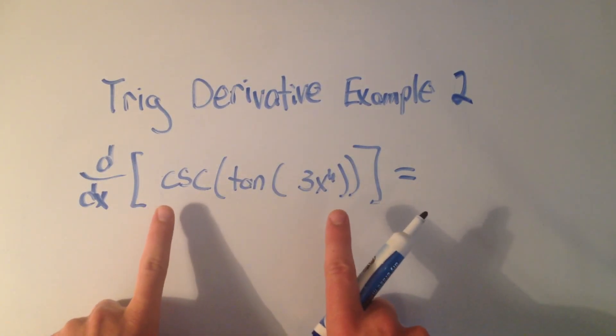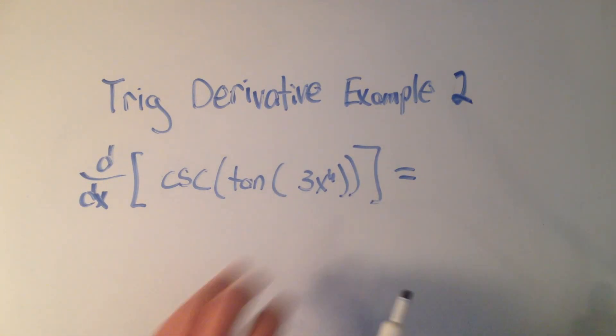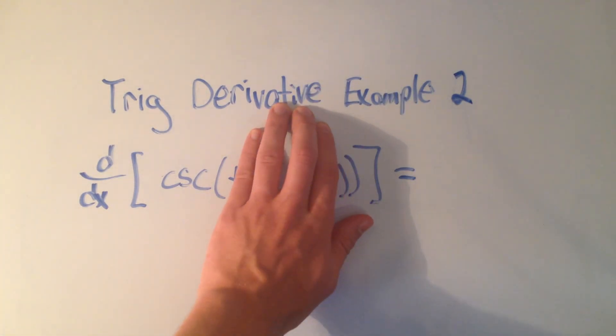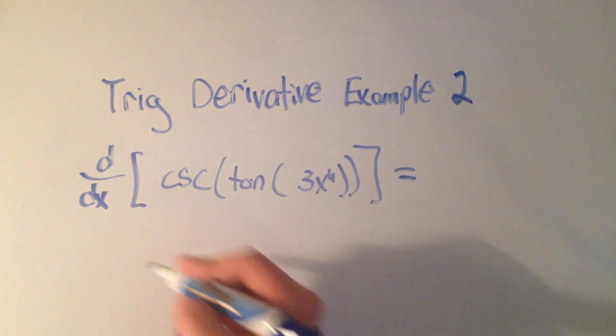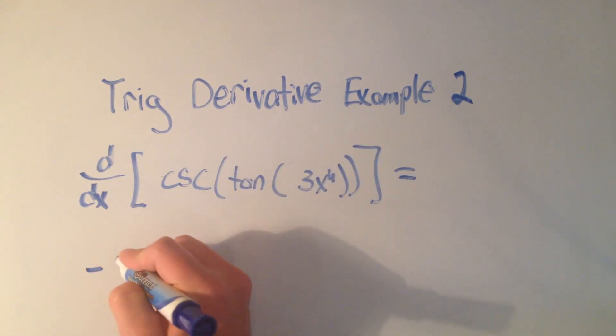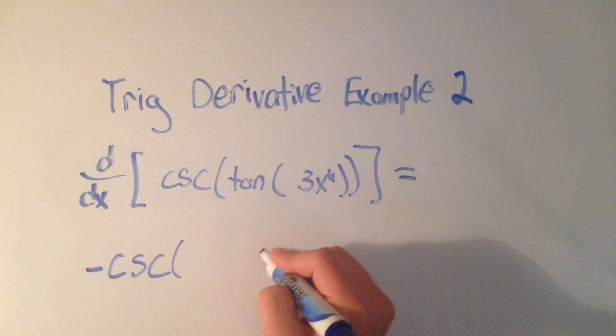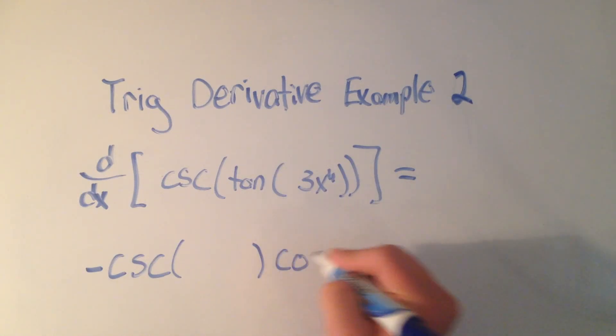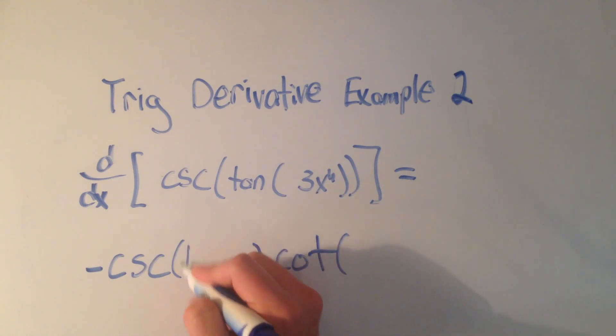We're going to start on the outside and work our way in. The derivative of cosecant is minus cosecant cotangent and I keep whatever is on the inside. So I'll keep tangent of 3x to the fourth.